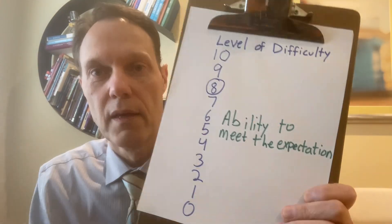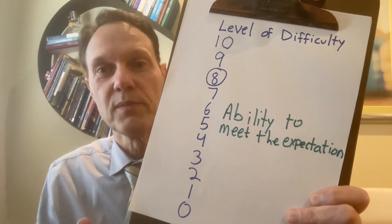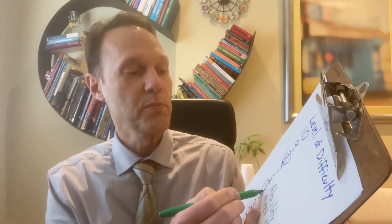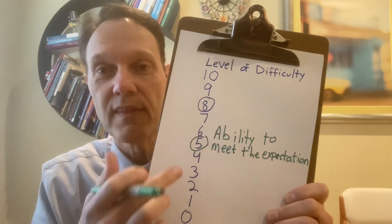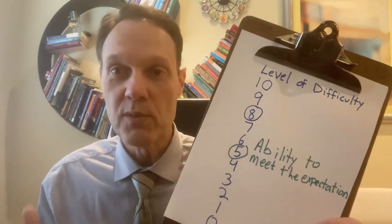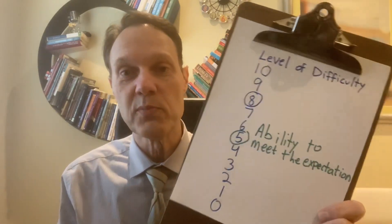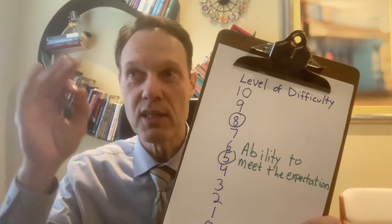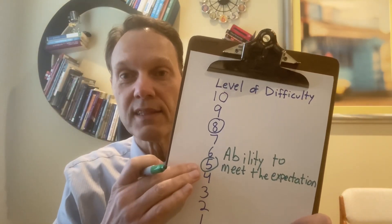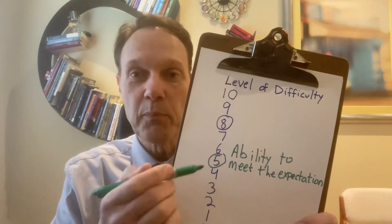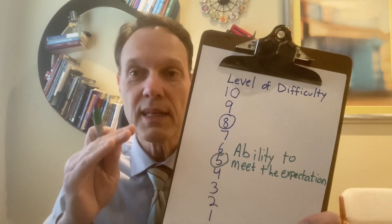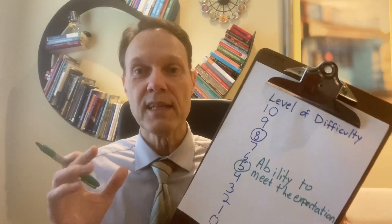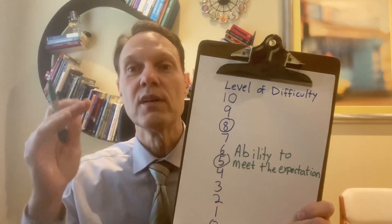The second variable is the ability to meet the expectation. Let's suppose you assess your ability to meet the expectation and you say your ability is about a five. As you can see, the level of difficulty is higher than the ability to meet the expectation — that's going to cause stress. That is the definition, the recipe of stress: you have an expectation and you feel there's a high chance you will not meet it. The bigger this gap, the higher the stress. The closer these two numbers get together, stress decreases.